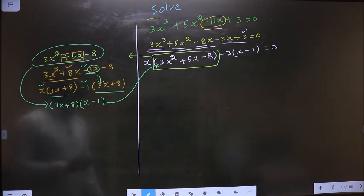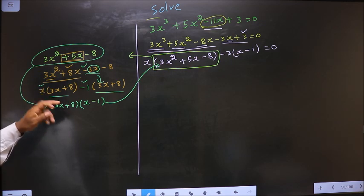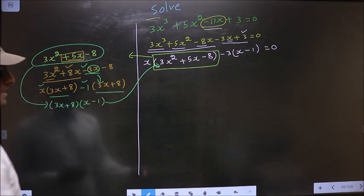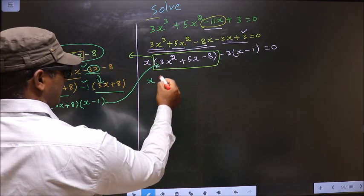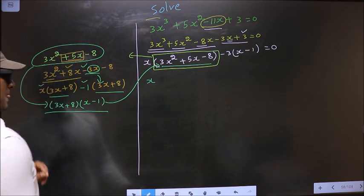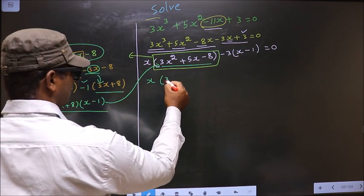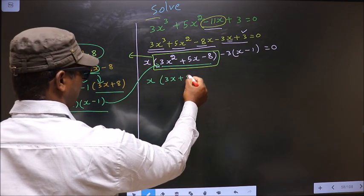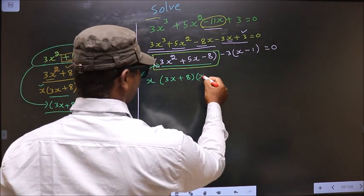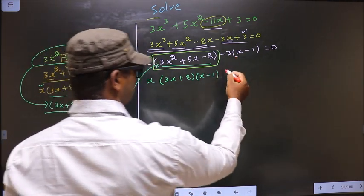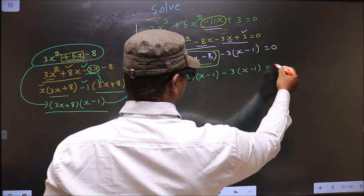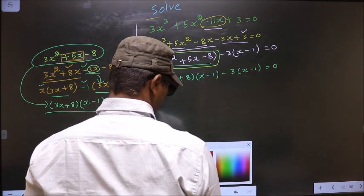Now in place of this quadratic you replace this over here. That is x times — in place of this quadratic now I write 3x plus 8, x minus 1. Here no change.